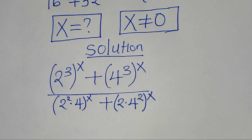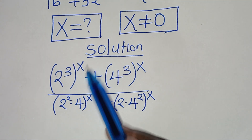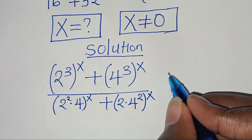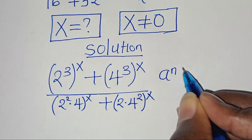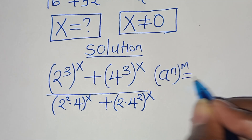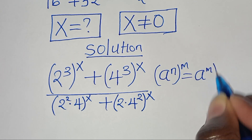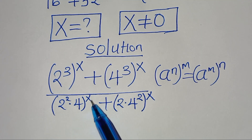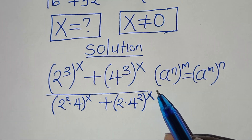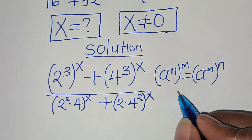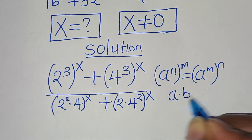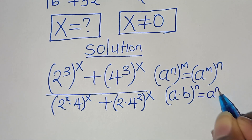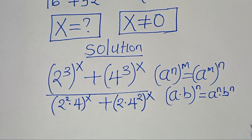Now, 2 to the power of 3 to the power of x, as well as 4 to the power of 3 to the power of x, is in the form of a to the power of n, raised to the power of m, which we can express as a to the power of m, raised to the power of n. And 2 squared multiplied by 4 to the power of x, as well as 2 times 4 to the power of 2 to the power of x, is in the form of a multiplied by b, raised to the power of n, which can be expressed as a to the power of n multiplied by b to the power of n.